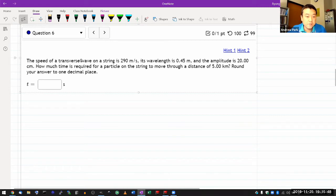The speed of a transverse wave on a string is 290 meters per second, its wavelength is 0.45 meters, and the amplitude is 20 centimeters. How much time is required for a particle on the string to move through a distance of 5 kilometers? Round your answer to one decimal place.